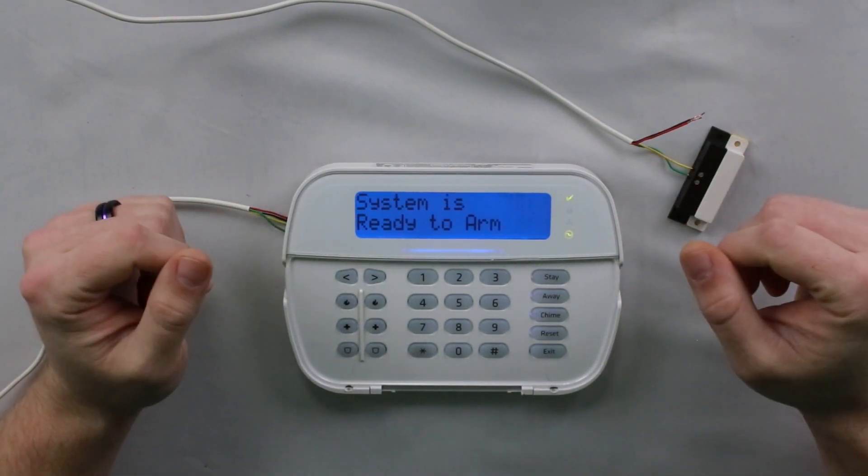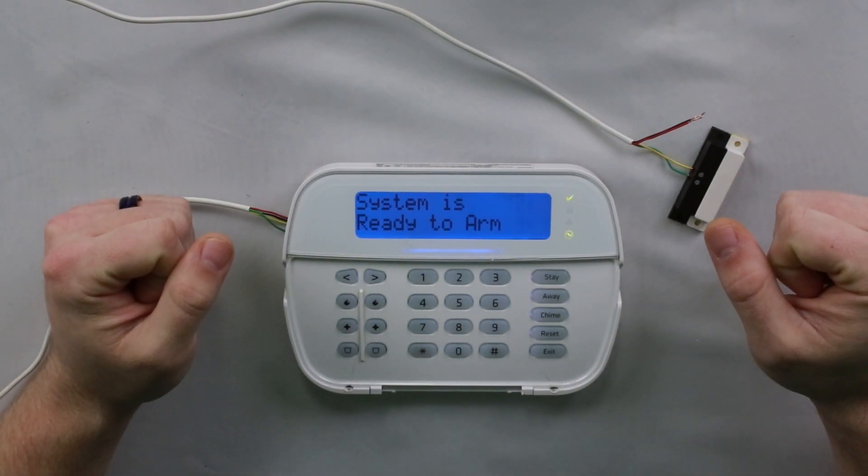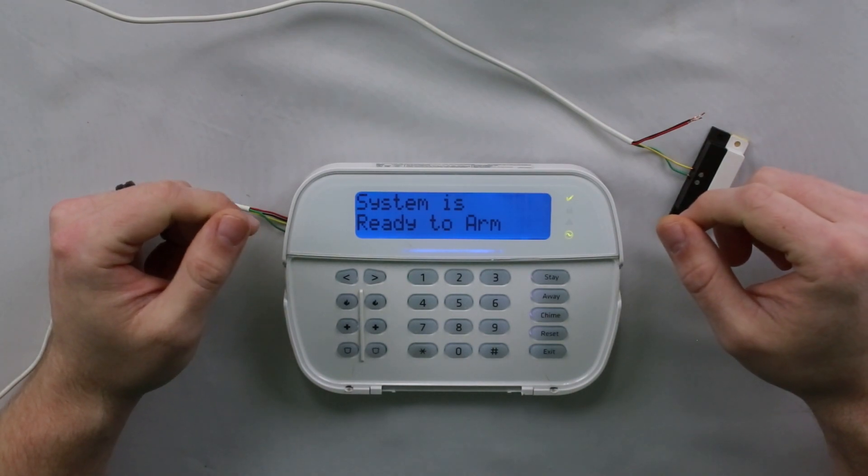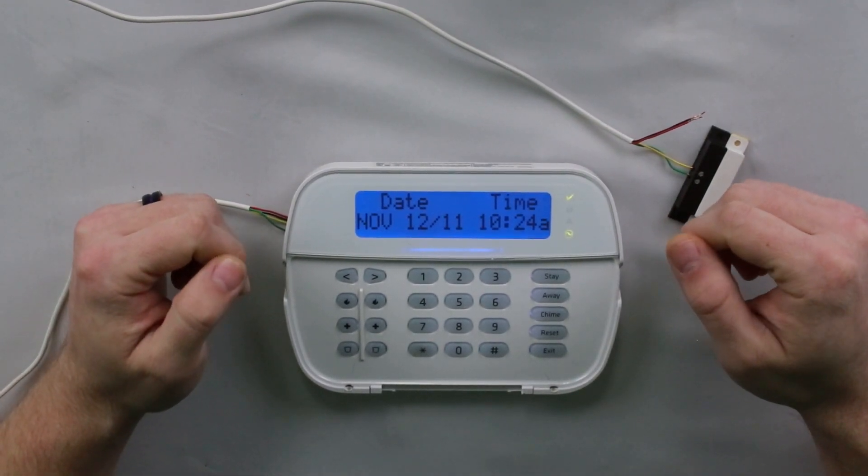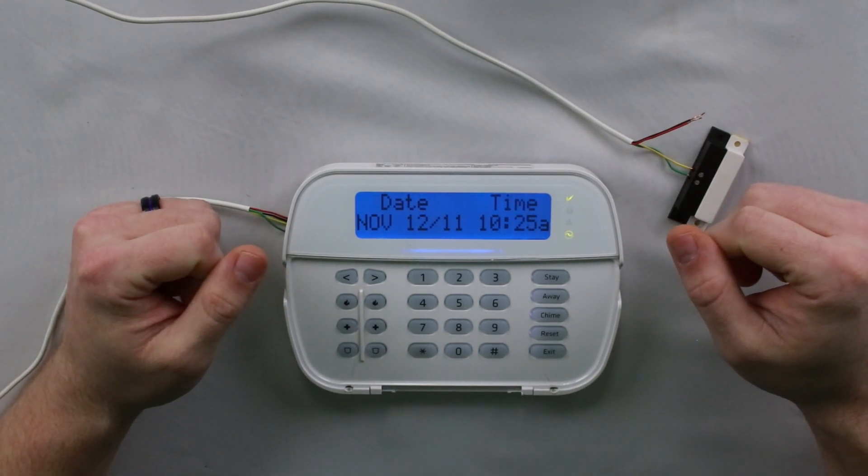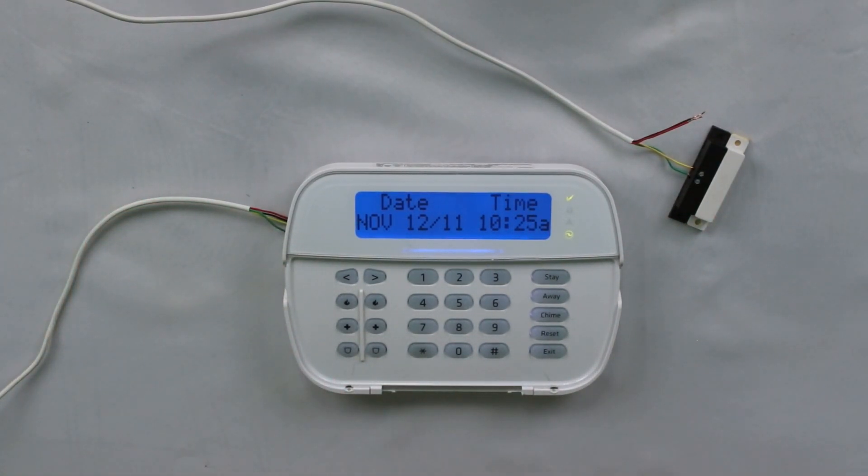So that is essentially all there is to the chime on the DSC Neo. Hopefully this taught you something. If you need to adjust the chime for your system, that is how you do so. If you guys could, like and subscribe if you're on our YouTube channel. If you're on our website, there is a link to the YouTube channel from every video page. So if you want to see more videos like this, you can go check there. Otherwise, I will catch you guys on the next one.